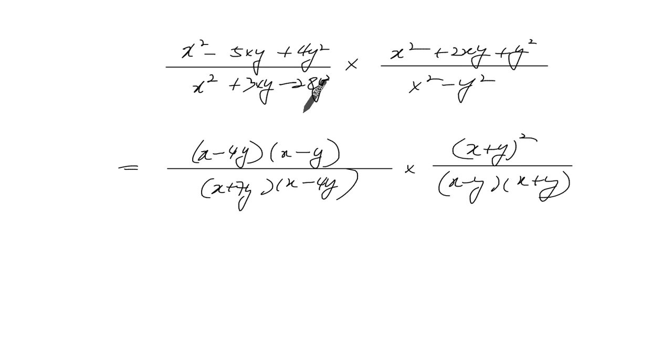So the restriction comes from these four factors. x cannot equal negative 7y or positive 4y or y or negative y. If any one of those are equal to each other, we have a zero on the bottom, which is not allowed.